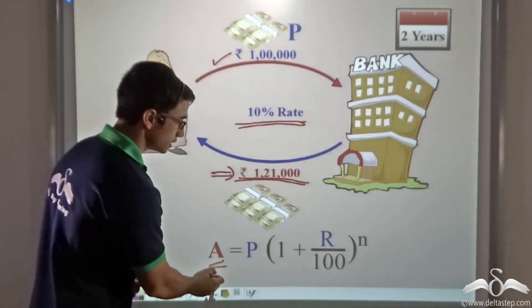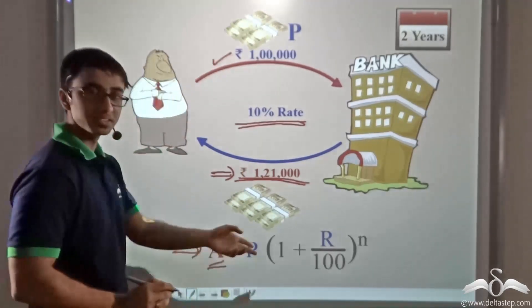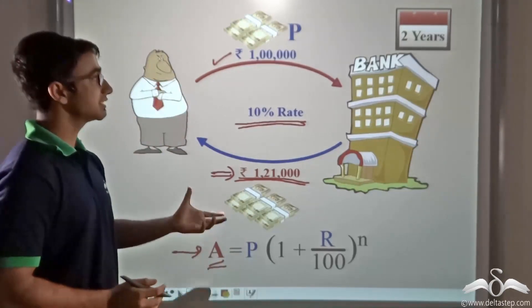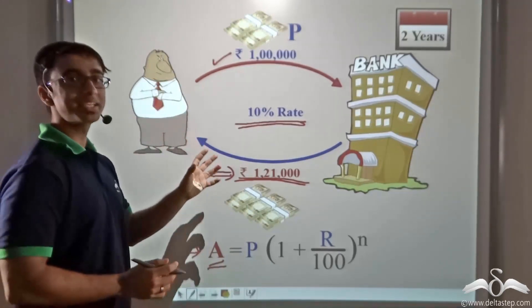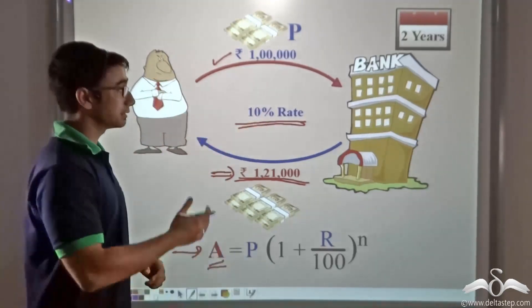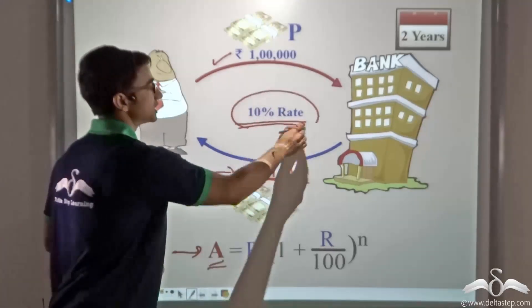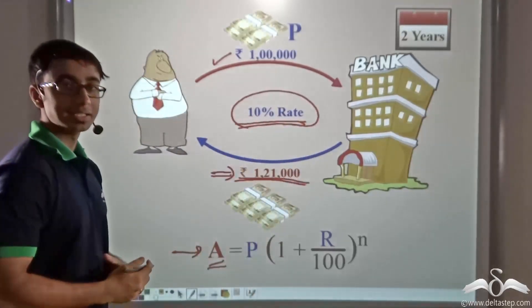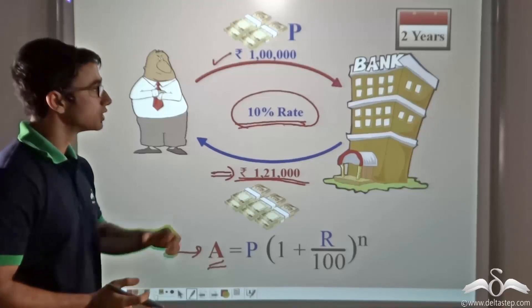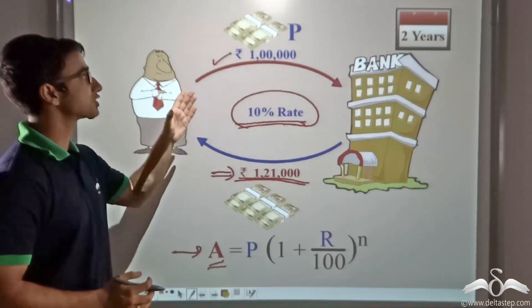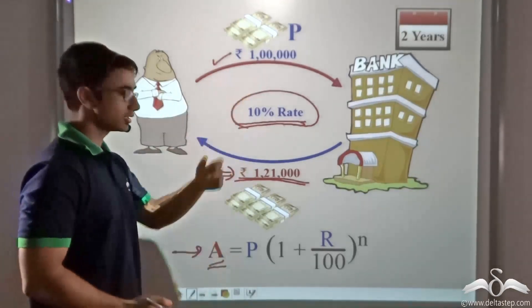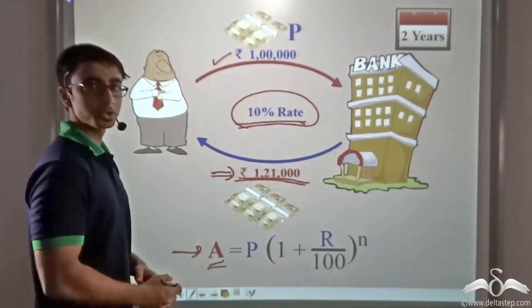So we found the amount with the help of this formula. We see that when a certain amount of money is being kept in a bank and the bank is offering a certain rate of compound interest, that money grows. So Sudhir's money has grown from Rs 1 lakh to Rs 1 lakh 21,000.